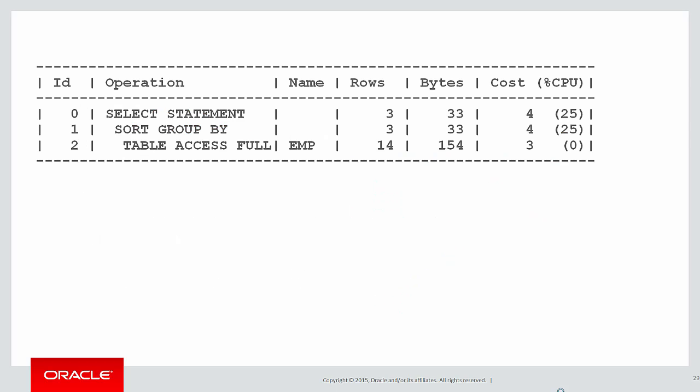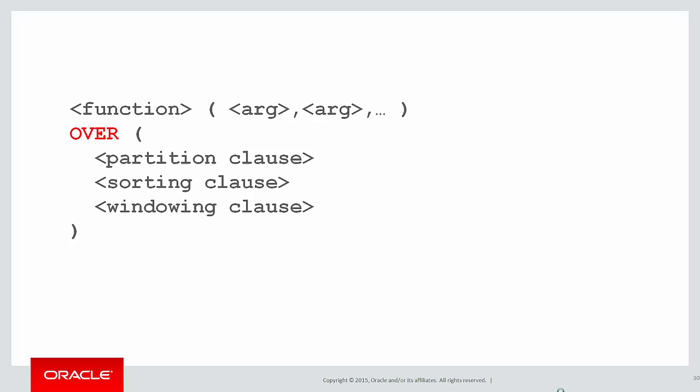The nice thing with that is it's one path through the table — we didn't have to double up the workload. We simply did a normal sort and a table access full just once. The question is: does that mean that OVER is no longer the sole attribute of an analytic clause?